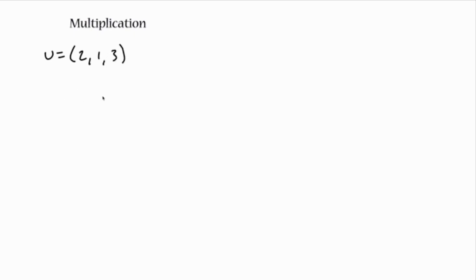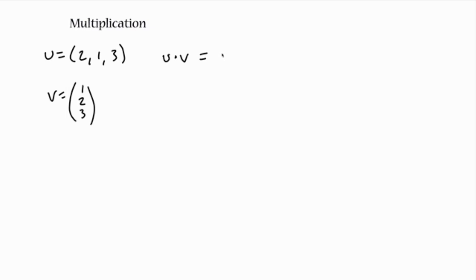Let's say I've got a row vector U and a column vector V. Because of the properties of vector multiplication, I can multiply U times V. You multiply the first elements of each vector together, plus the middle ones, plus the end ones — so 2 times 1, plus 1 times 2, plus 3 times 3, which equals 13.